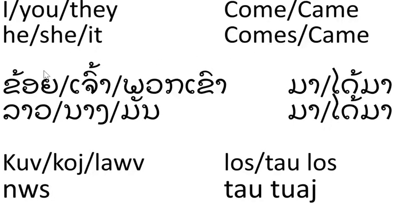And in Lao, you said: khoi ma, jeau ma, pook keau ma — and for past tense: khoi dai ma, jeau dai ma, pook keau dai ma.